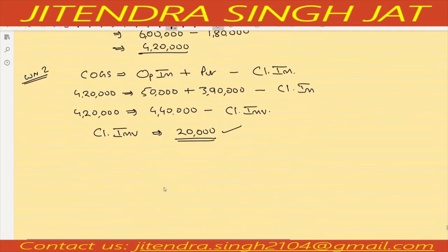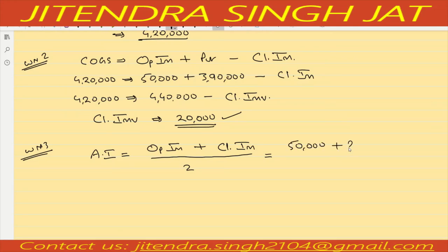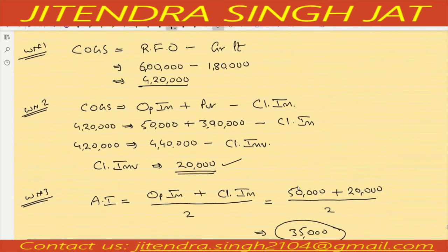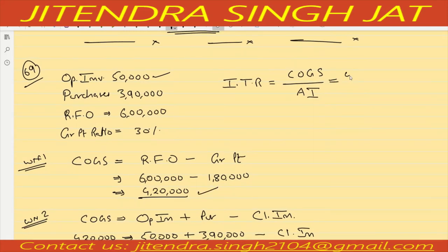Opening inventory is 50,000 and closing inventory is 20,000. Average Inventory: 50,000 plus 20,000 divided by 2 equals 70,000 divided by 2, which is 35,000. Cost of Goods Sold is 4 lakh 20,000. 4,20,000 divided by 35,000 equals 12 times. Inventory turnover ratio is 12 times.